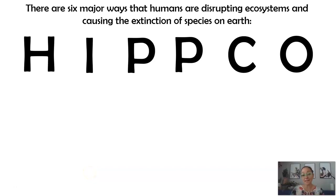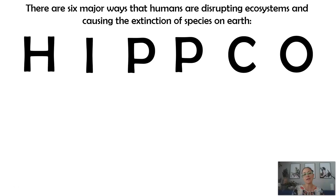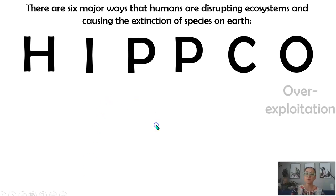This is part two in my AP Bio topic 8.7, disruptions to ecosystems. Here I'm going to skip C for right now and just briefly talk about the O in HIPCO, which stands for over-exploitation or over-harvesting.